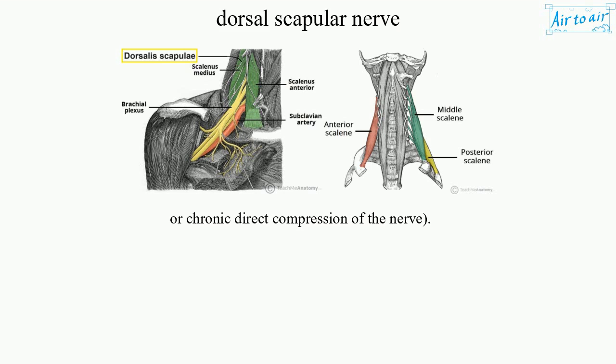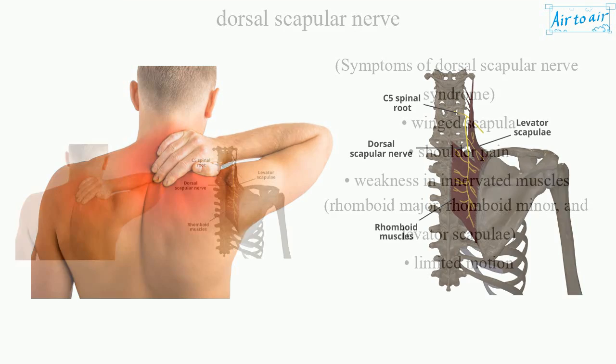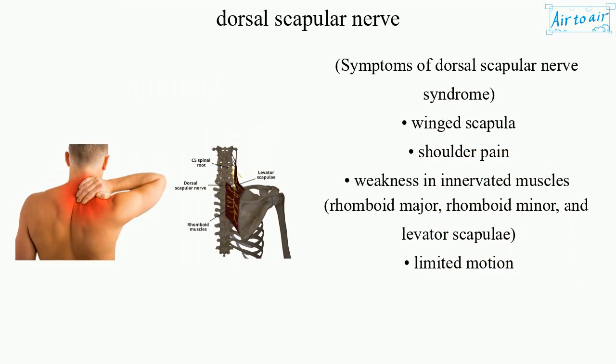Direct compression of the nerve can also occur. Symptoms of Dorsal Scapular Nerve Syndrome include: winged scapula, shoulder pain, weakness in innervated muscles — Rhomboid Major, Rhomboid Minor, and Levator Scapulae — and limited motion.